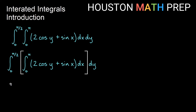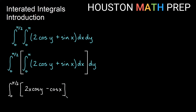Let's first copy down our outer integral from 0 to pi over 2. Then doing the antiderivative with respect to x: 2 cosine y is just a constant, and integrating a constant dx we just multiply by x, giving us 2x cosine y. The antiderivative of sine x with respect to x is minus cosine x. Our bounds we plug in from 0 to pi — note we integrated dx, so we're plugging in 0 for x and pi for x so we don't get confused about which variable.